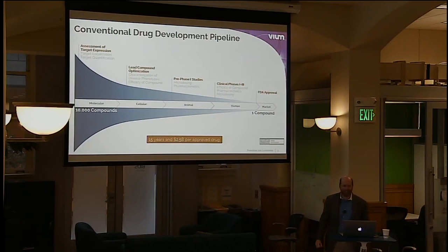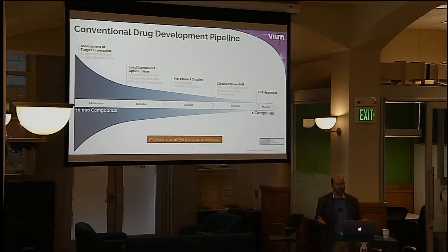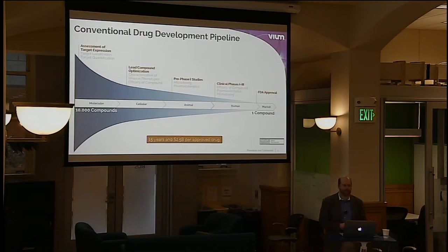This is a huge success, and the whole funnel takes about 15 years to run and $2.5 billion per drug — a tremendously enormous endeavor. Last year, I think there were 19 new drugs approved, so each one is really a gem. There's an enormous R&D apparatus built up around doing this, with about $200 billion spent every year running this pipeline. Pharmaceuticals are a trillion-dollar industry.